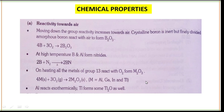Now the chemical properties of group 13 elements. Number one is reactivity with air: when you move down the group from boron to thallium, reactivity with air increases. Crystalline boron is inert, while finely divided boron reacts with air to form B₂O₃ at high temperature. Boron and aluminium form nitrides on heating. All metals of group 13 react with O₂ to form M₂O₃ type compounds.